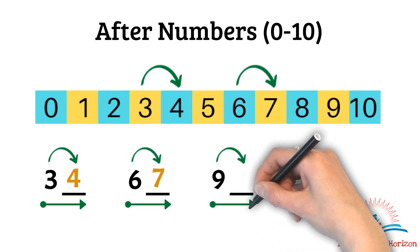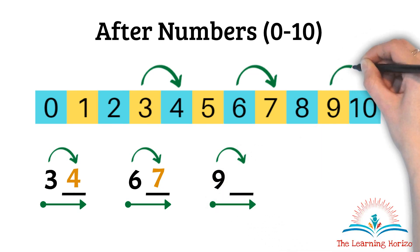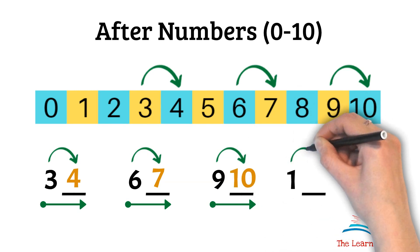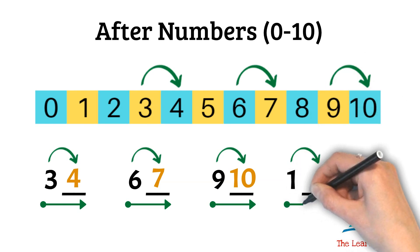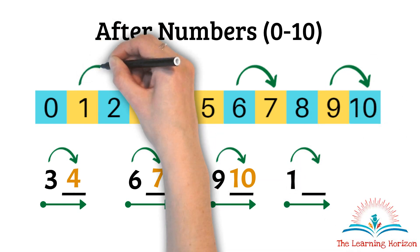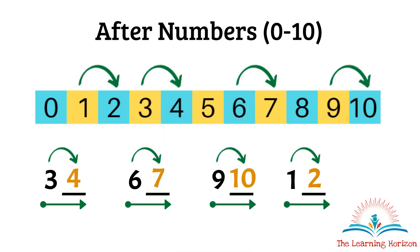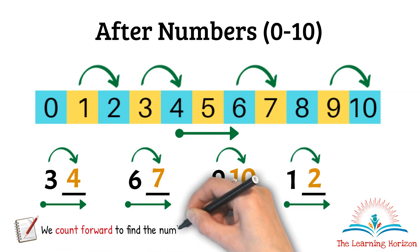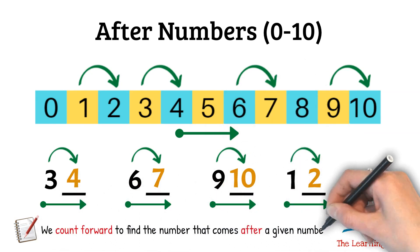Which is the number that comes after 9? Again I'll move forward to find the number — it is 10. Which is the number that comes after 1? It is 2. So as you observe here, we always count forward to find the number that comes after a given number.